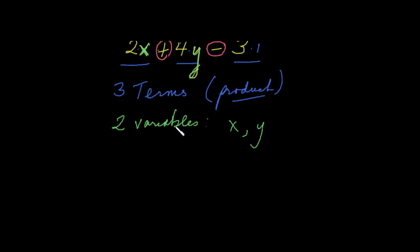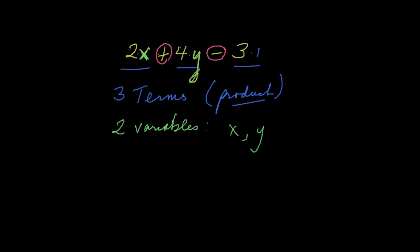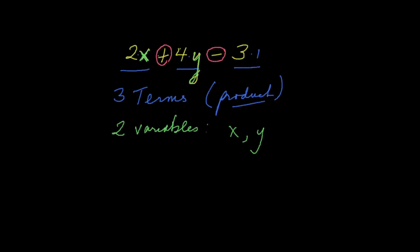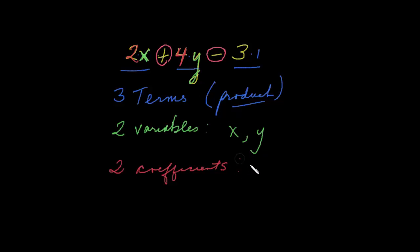Next, the values that are in front of the variables — let's color code these. The two and the four are referred to as coefficients. So we have two coefficients: the two, which is in front of the x, and the four, which is sitting in front of the variable y. The coefficients are the numbers in front of the variables.